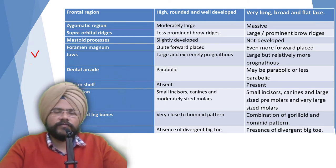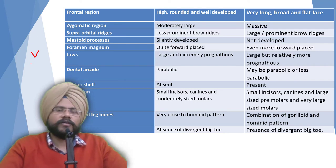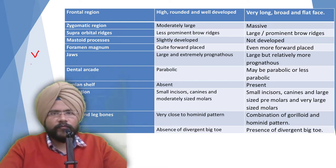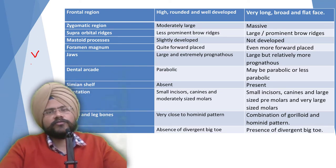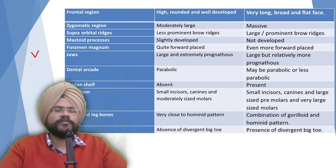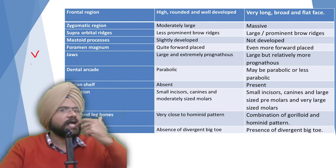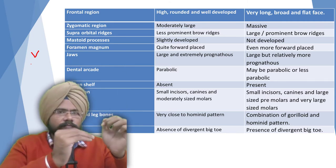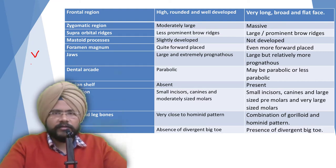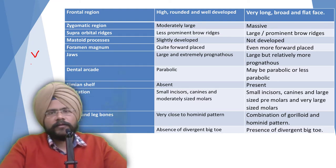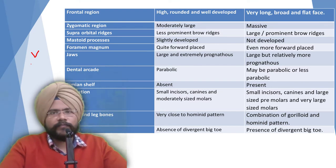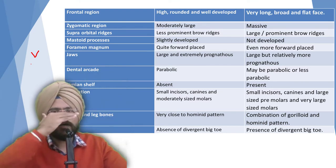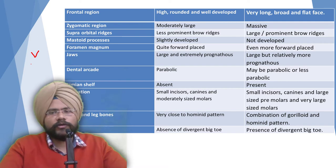The simian shelf — a shelf-like structure behind the teeth found in primates and apes — is absent in the gracile form because prognathism is lower. The larger the simian shelf, the greater the prognathism, meaning the anterior structure is more protruded.